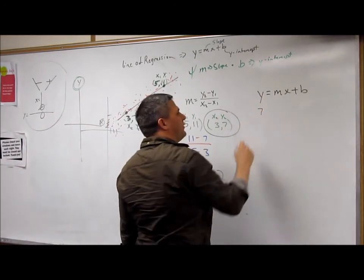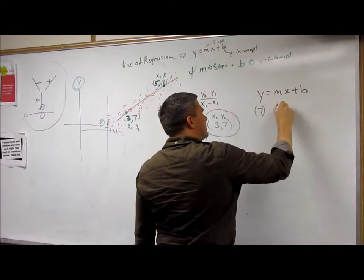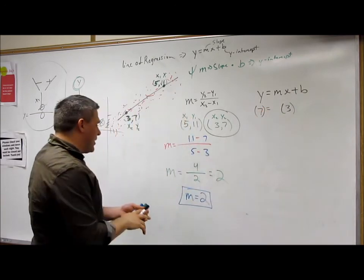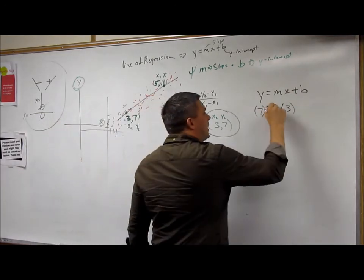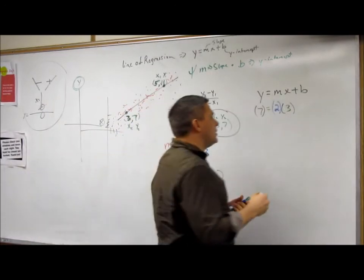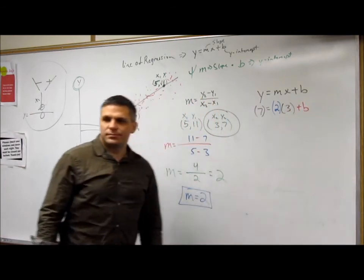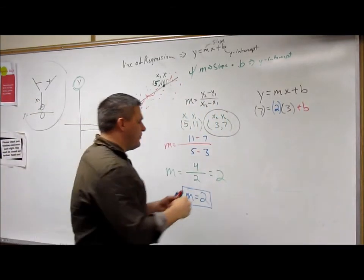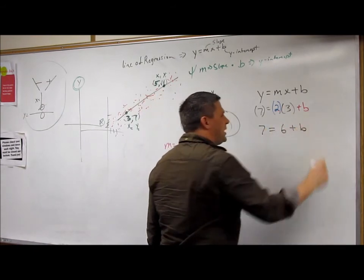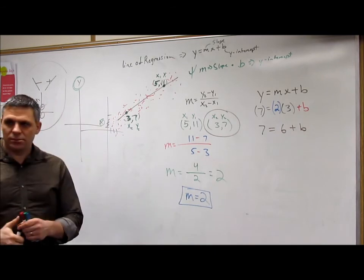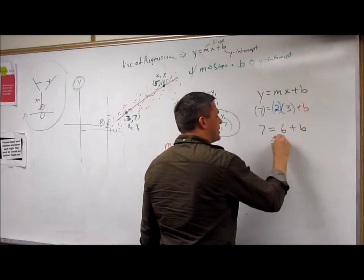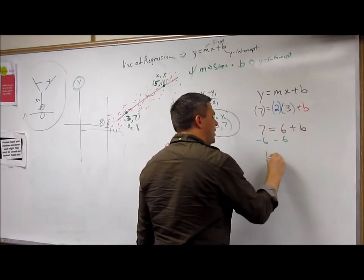So I've got 7 for y, and I've got x, it's going to be 3. And then what do I have for m? My m is 2. So what's b? It's still b. So now I have basically 7 equals 6 plus b. So what I do is I subtract 6, subtract 6, and I've got 1 equals b.